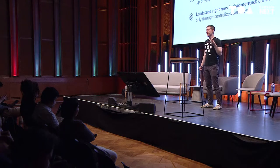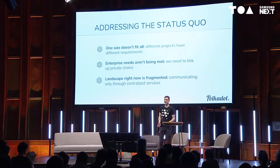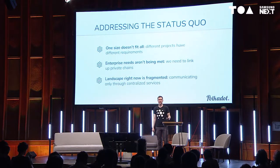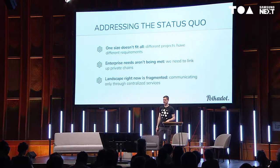One goal of interoperability is to allow private chains to exist but make their data accessible from public chains — as determined by the private chain, not at the whims of public governance. Right now the landscape is fragmented; almost every blockchain project is starting its own chain, and the only way they can communicate is through centralized services, which really diminishes the network effect that could exist between these projects.